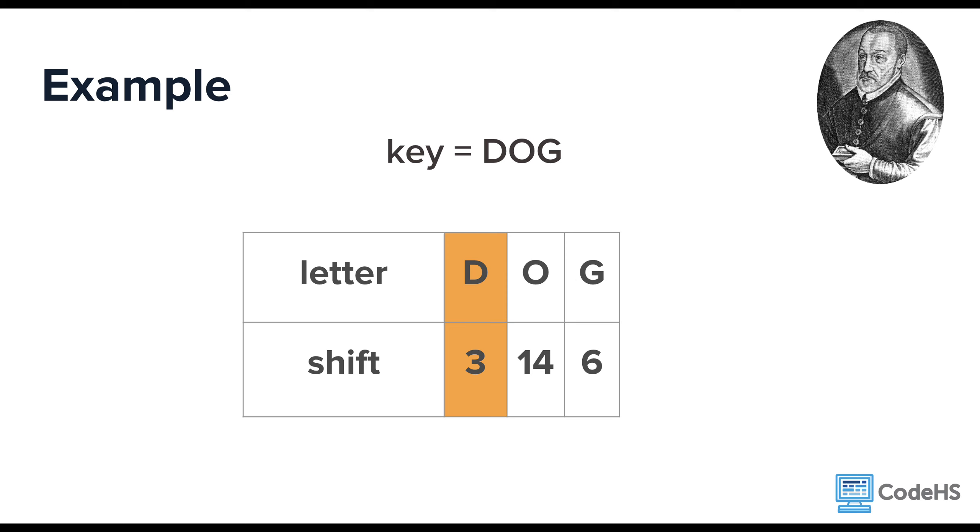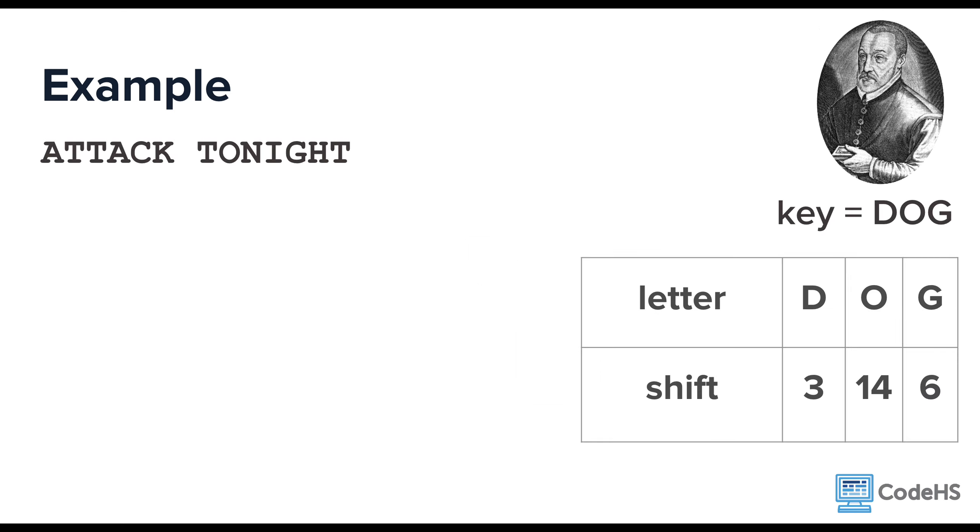The first letter of the plain text would be encrypted using a shift of 3. The second letter would be encrypted using a shift of 14, and the third letter would be encrypted using a shift of 6. Then, it would just start over and continue this pattern of 3, 14, 6 for the entire message. Let's look at an example. The first letter is shifted 3 times to the letter D. The second letter is then shifted 14 times to the letter H. The next letter is shifted 6 times to the letter Z.